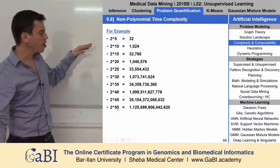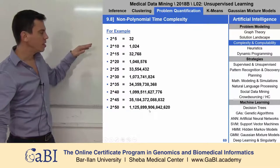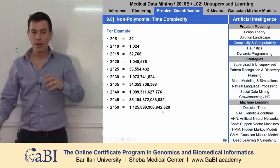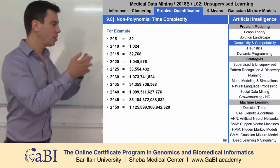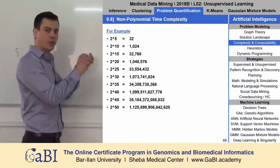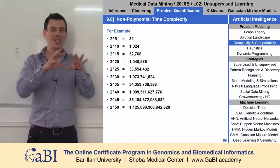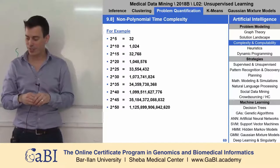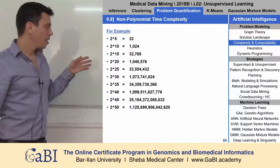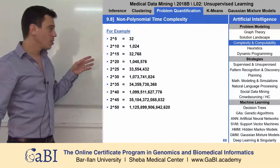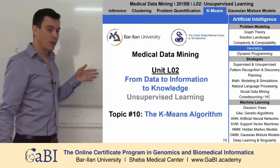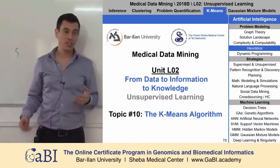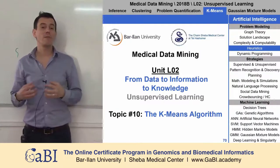So if we have 10 patients, we need to do 1024 operations. If we have 50 patients, this is the number of operations that we need to do, just in order to examine all the different combinations of dividing all the patients into clusters. And as I told you also in the introduction, this is something that is impossible to do. It's just impossible.